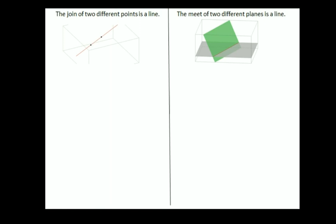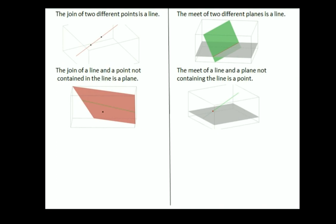So, I'm going to discuss what I call the propositions of incidence. So, there's six of these. The first one is that the join of two different points is a line. And then there's a kind of dual proposition, which is that the meet of two different planes is a line. Another proposition is that the join of a line and a point that's not in that line is going to be a plane. And the dual of this is that the meet of a line and a plane that does not contain that line is going to be a point.